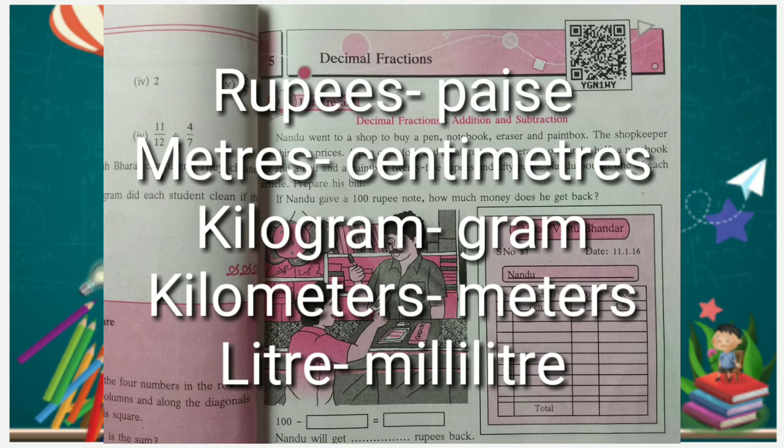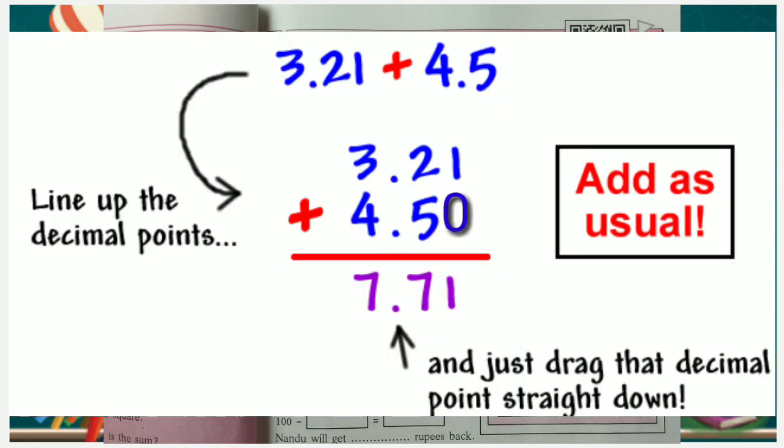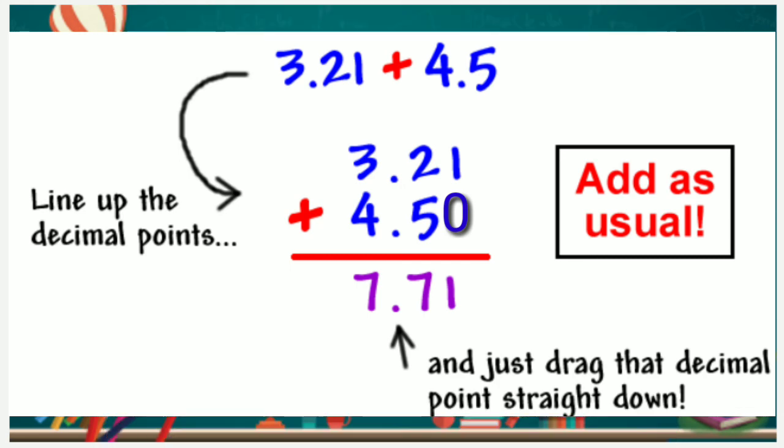Let's see an example. While adding any decimal fractions, write the digits of the given numbers one below the other such that all the decimal points are in the same vertical line. Add as we add whole numbers. Put the decimal point of the sum vertically below the other decimal points. If there are no numbers mentioned, then you should write 0 in that place.